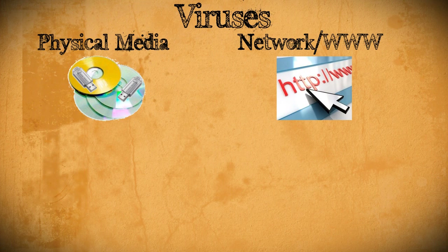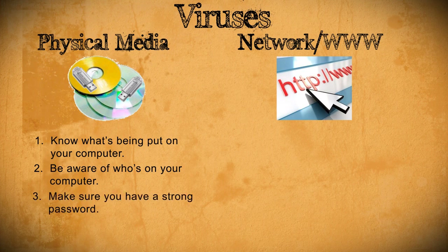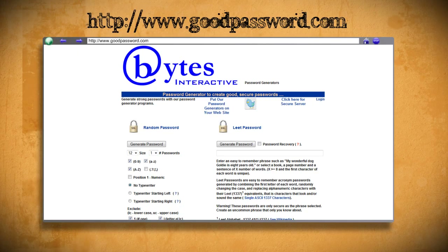To protect your computer against physical media, just make sure that you know exactly what's on a disk or USB drive before putting it on your computer. Also make sure that you know who's on your computer at all times and are aware of what they're doing on it. Lastly, you can make sure that your computer has a strong randomly generated password on it, such as the ones that you can make here.